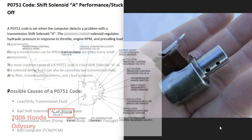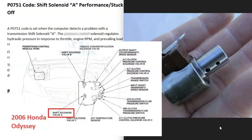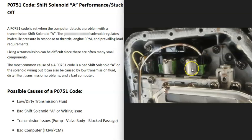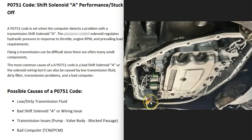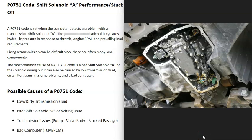The next possible cause is a bad shift solenoid A or the wiring going to it. The solenoid might have failed and just needs to be replaced. A common method to test it is to use a multimeter and check resistance in ohms, making sure it falls in the correct range. For example, if the solenoid should read 11 ohms but comes in at 10.7, it's bad. Also keep in mind that wiring issues — like an open, a short, or a bad connection — can cause the same symptoms as a bad solenoid.